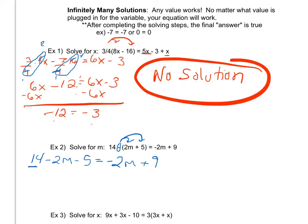So I have some like terms over here. I have 14 - 5, which is going to give me 9. My -2m drops down.